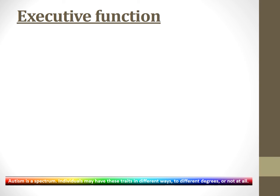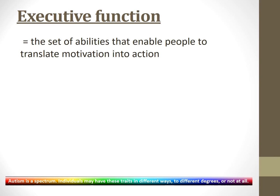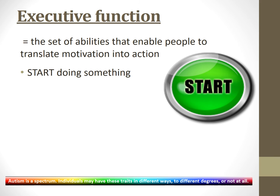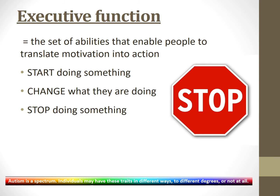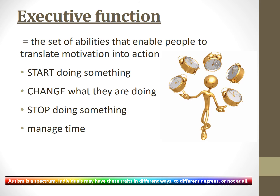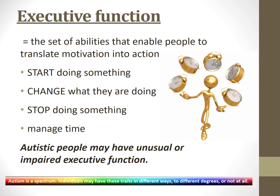The next concept I'd like to introduce is executive function. This is the set of abilities that enables people to translate motivation into action — to decide to do something and then do it, to start doing something, to change what you're doing, to stop doing something, or to manage time. Autistic people may have unusual or impaired executive function.